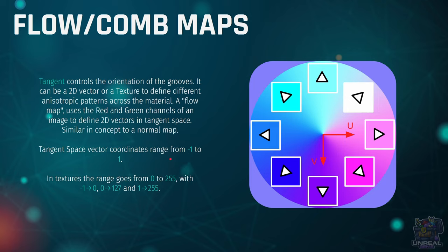The tangent pin controls the orientation of the grooves or the direction of the specular reflection stretching. It is a 2D vector that defines the direction of the anisotropic pattern across the material. We use flow maps or comb maps for this, because it is also used for hair. The flow map uses the red and green channels to define the direction — this is similar to a normal map, and the blue channel is going to be ignored.